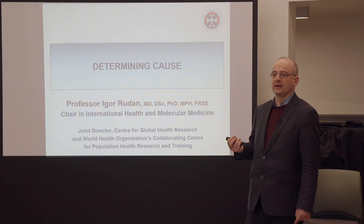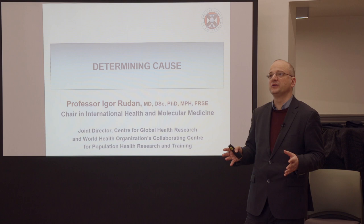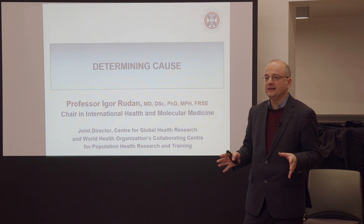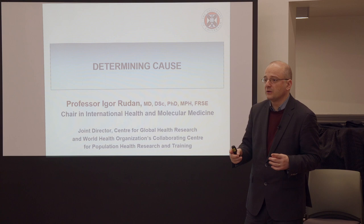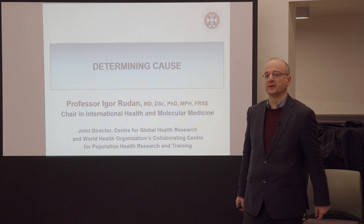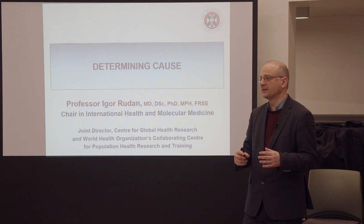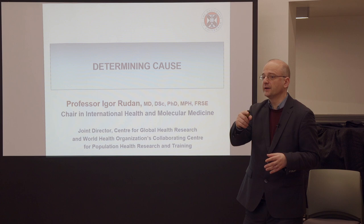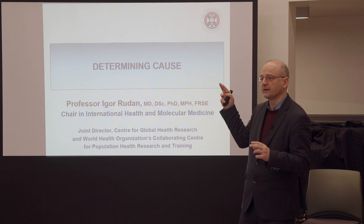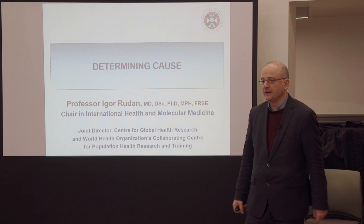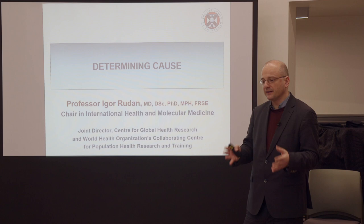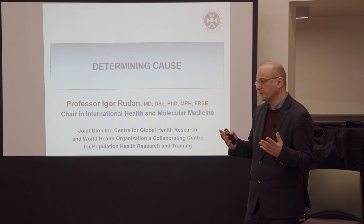One problem with risk factors is that while establishing correlation is quite easy — you can easily show that two things are correlated — whether they are also causally correlated is very difficult, almost impossible practically to establish. It's easy to statistically show over time that two things co-occur, but whether one causes the other, or whether both are correlated to some third confounding factor, is very difficult to say.